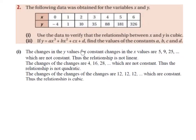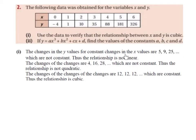The changes in the y values for constant changes in the x values are 5, 9, 25, and so on, which are not constant. To get from minus 4 to 1, we're adding 5. To get from 1 to 10, we're adding 9. To get from 10 to 35, we're adding 25 and so on. These are not constant — they are not the same. Thus the relationship is not linear.